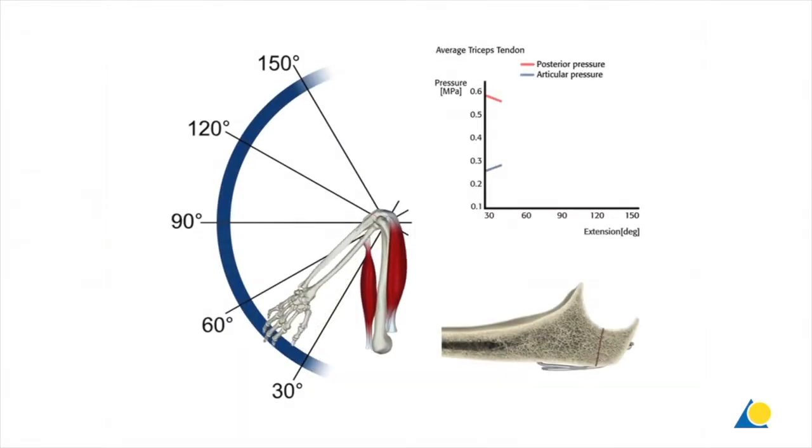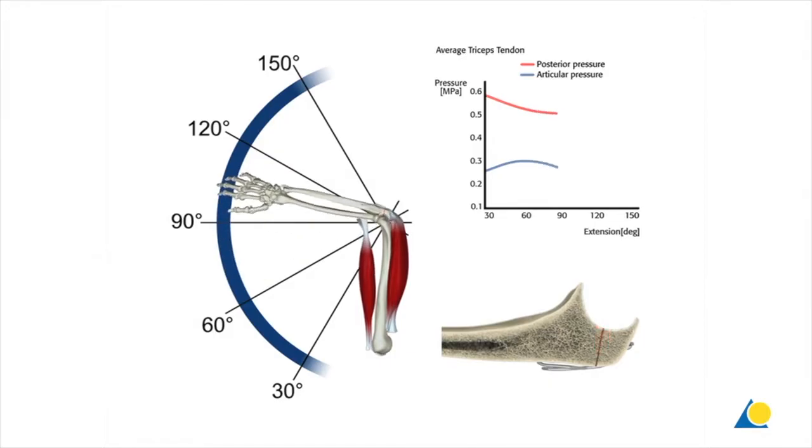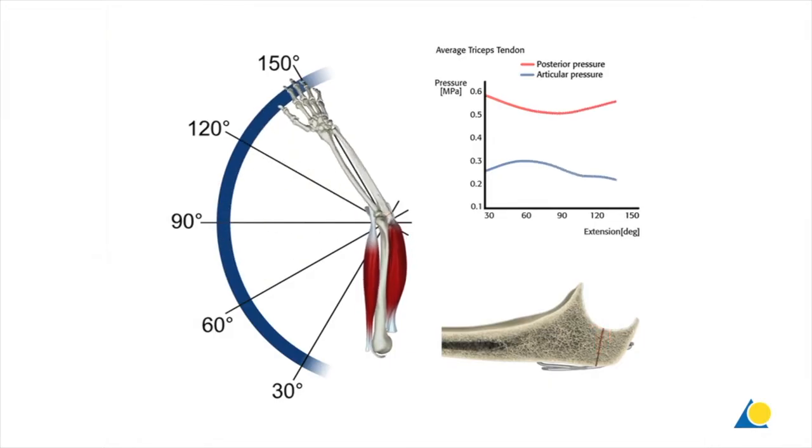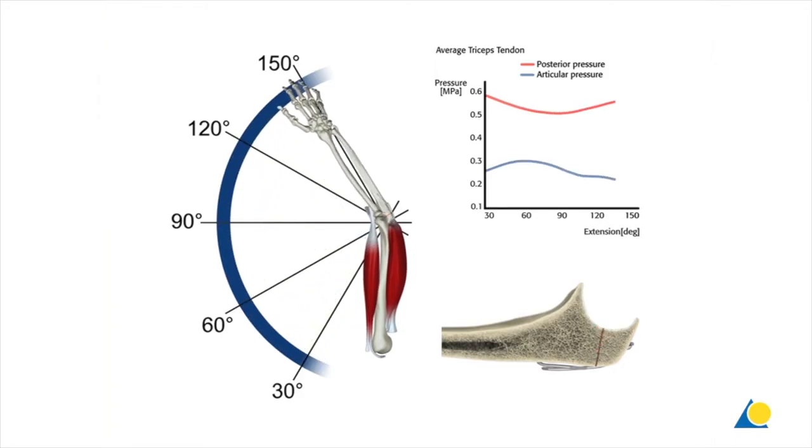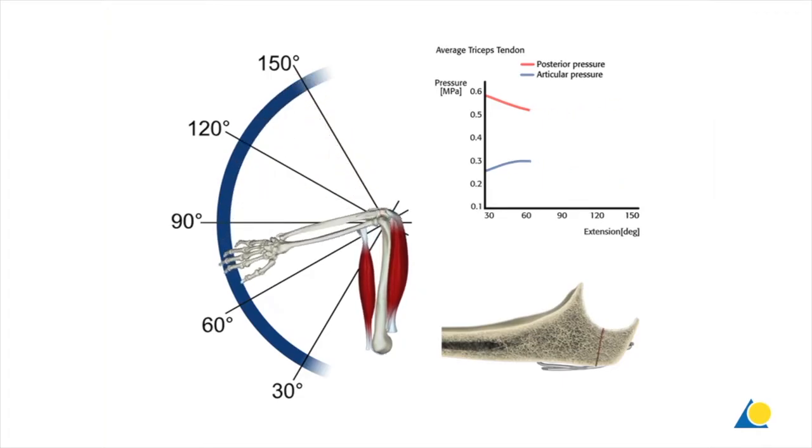When the elbow is actively extended using the triceps muscle, between the angles of 60 and 90 degrees, there's an increase in the compression force at the articular surface. The tension band converts the tensile force caused by the active use of the triceps muscle into a compression force at the opposite cortex.